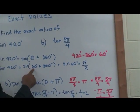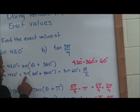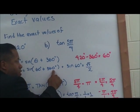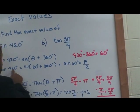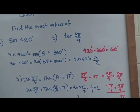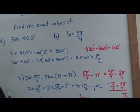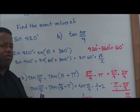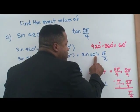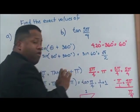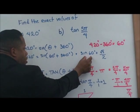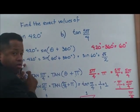420 degrees minus 360 degrees equals 60 degrees. We plug this into theta and we see that sine of 60 degrees plus 360 degrees is going to give you sine 420 degrees. We know that sine 60 degrees is the reference angle, and these two are corresponding angles of each other.